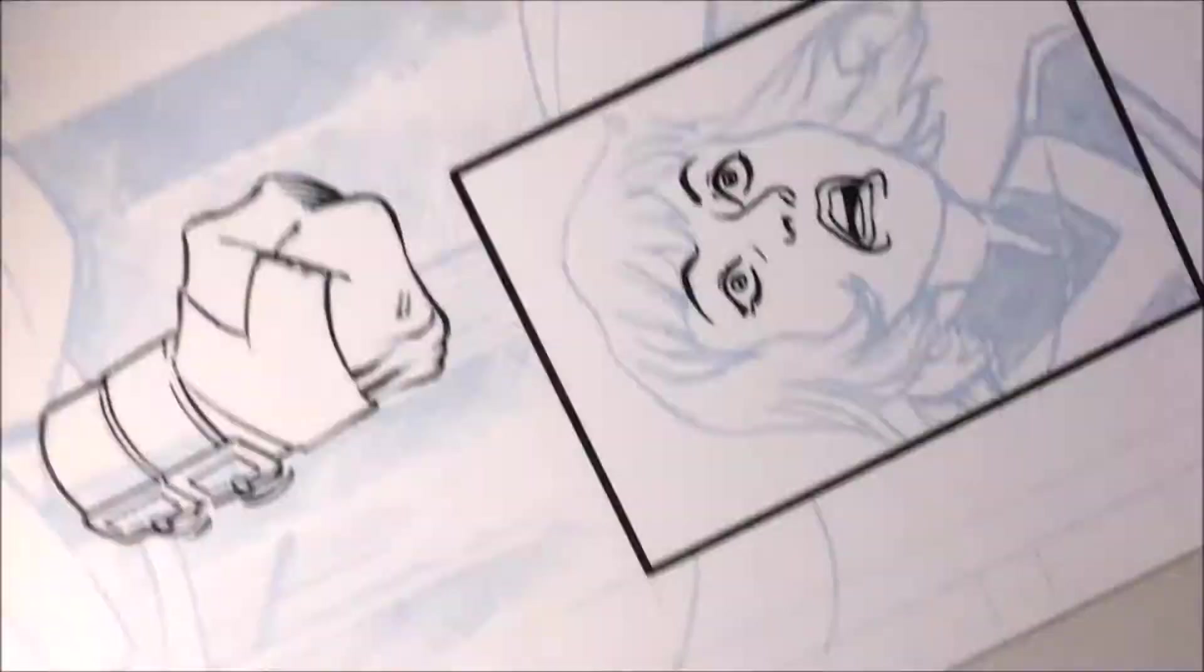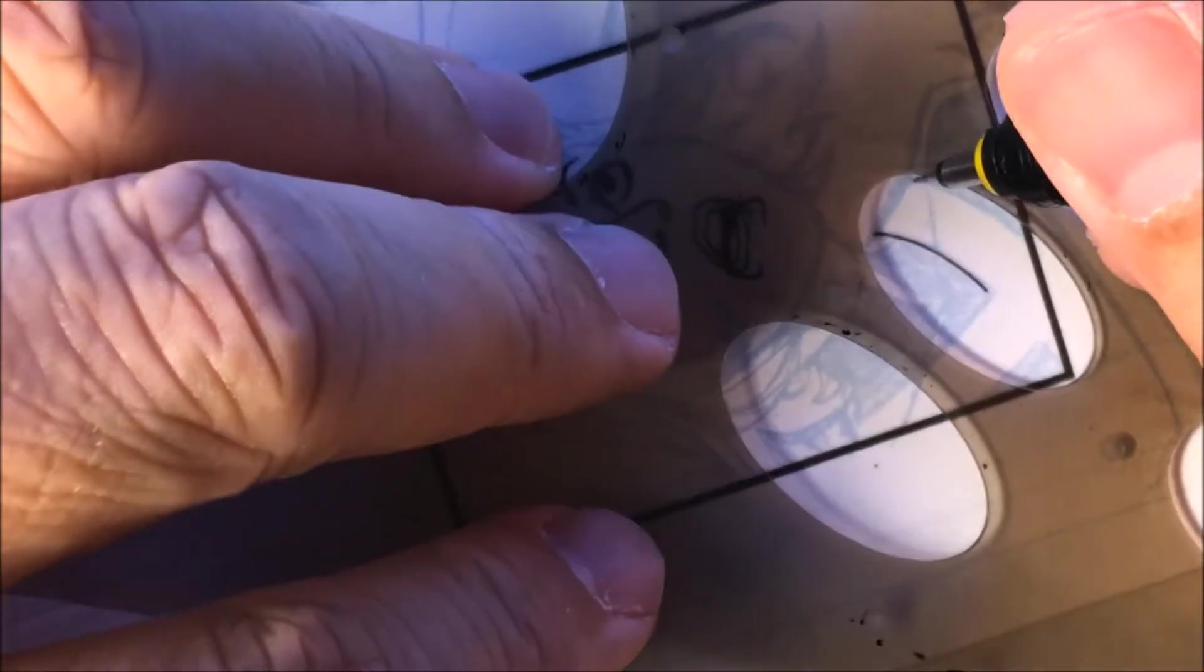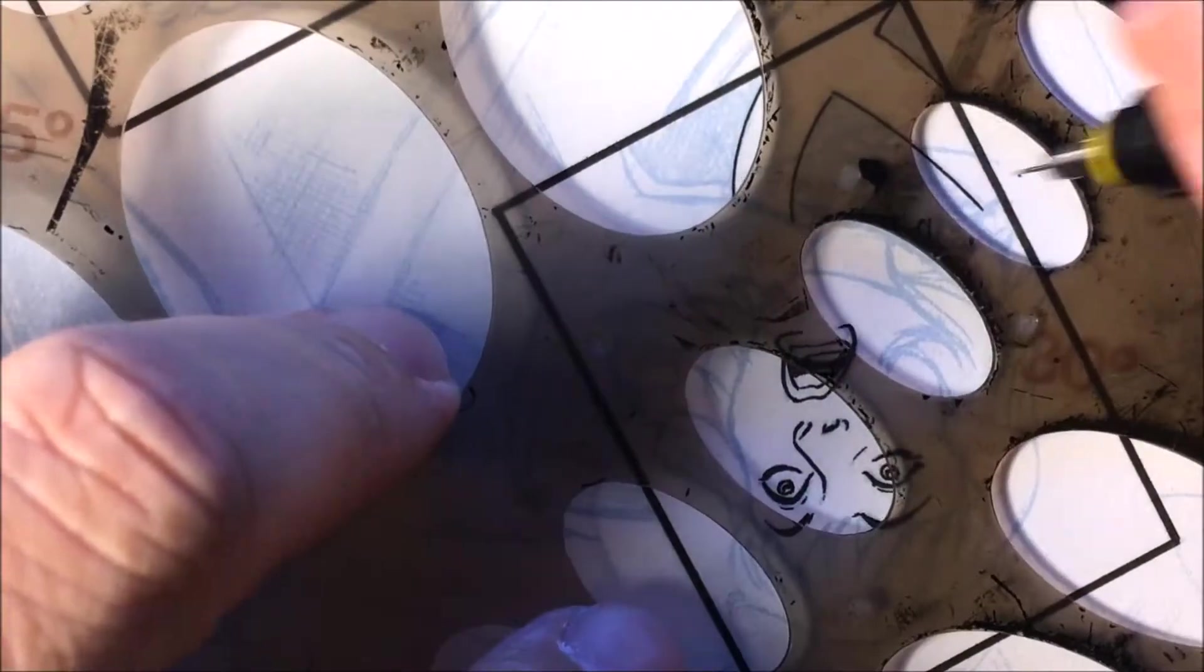After that, I'm going to ink some of the patterns on some of these characters' outfits. Using the template, I could always freehand this, but with logos and patterns and straight edge stuff, I like using a ruler and template.